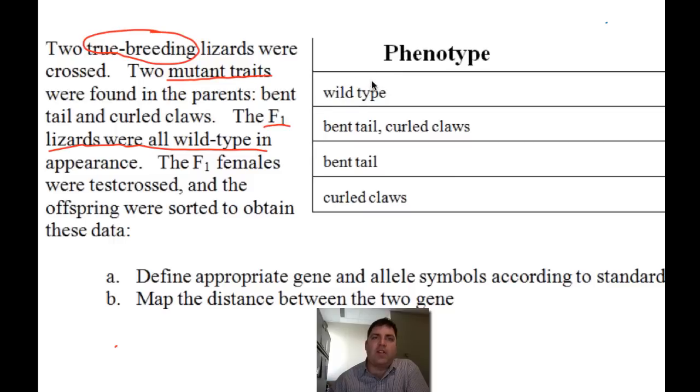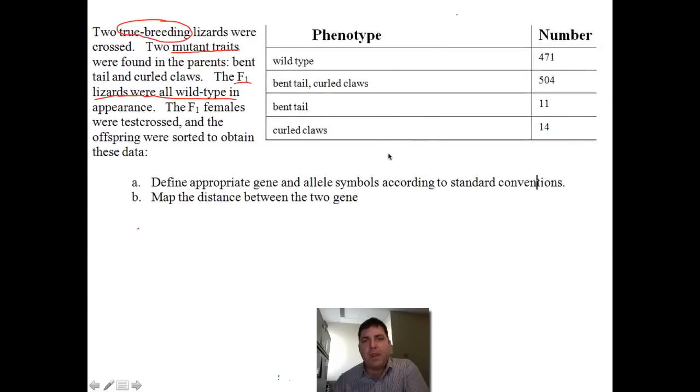Where this says wild type, we can assume that it has a tail but it's not bent, and we can assume there are claws, they just don't happen to be curled. Here we have a bent tail with normal claws, and we have curled claws with a normal tail at this point. The information I've underlined here, the F1 lizards being all wild type in appearance, tells us that both mutant traits are recessive. Well, let's work this out and see what else we can find out from this information.